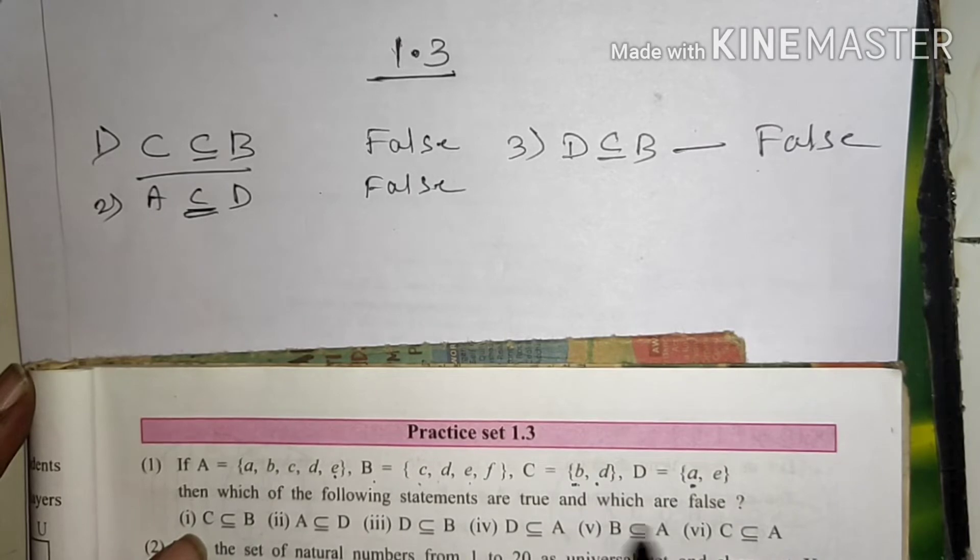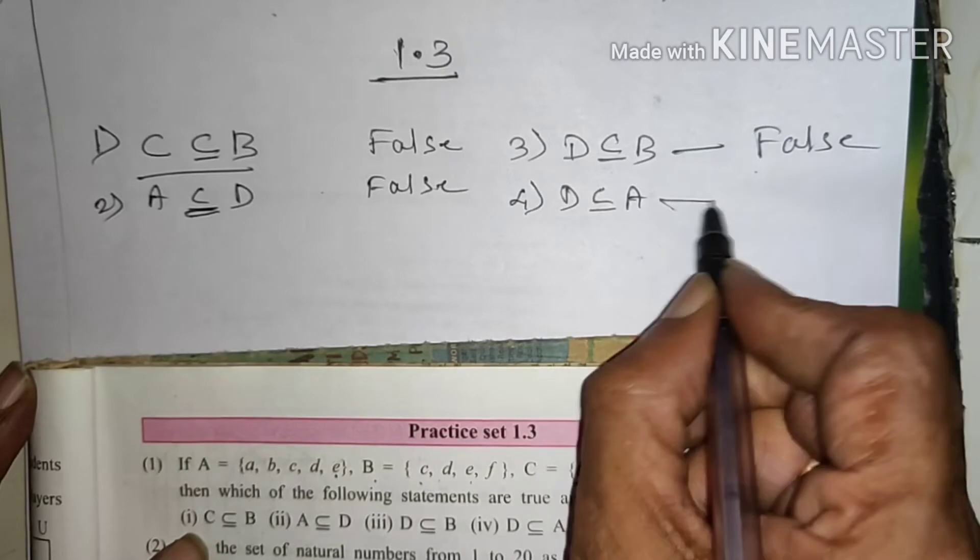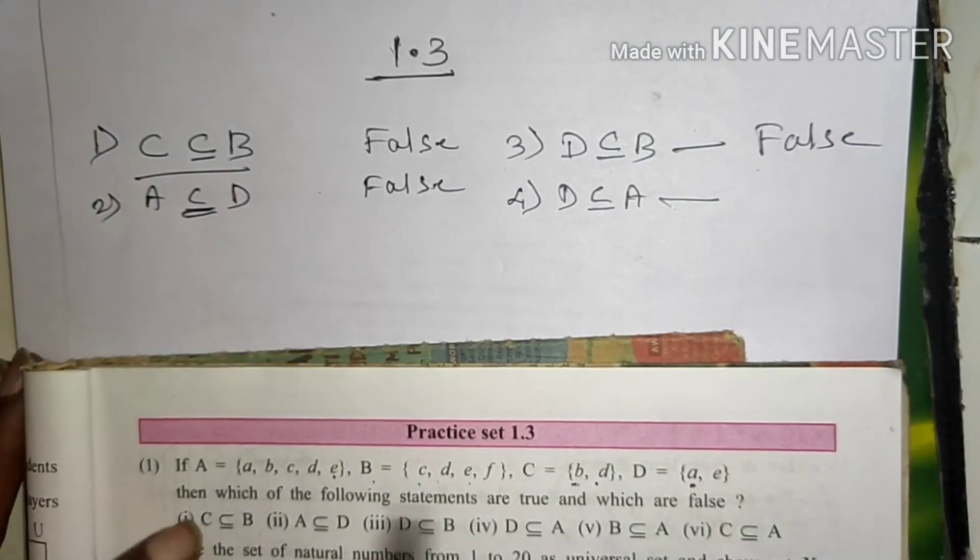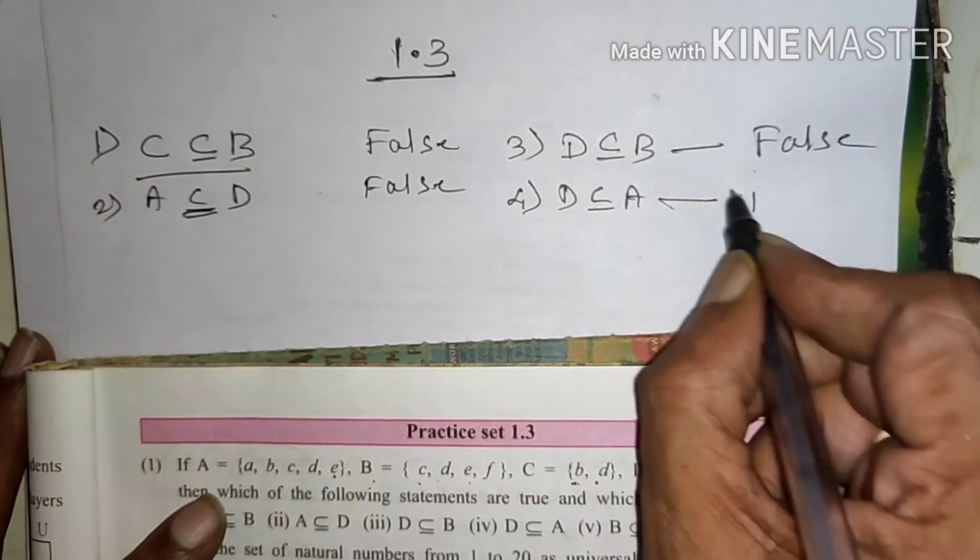Fourth one, D subset of A. D ke A or E hai, A mein A, B, C, D, E sab hai, to A or E A mein hai. That is, it is true.